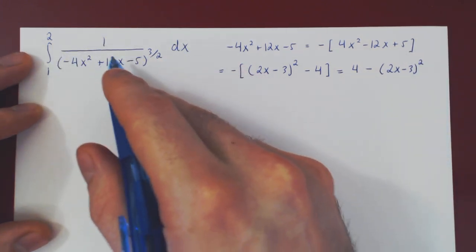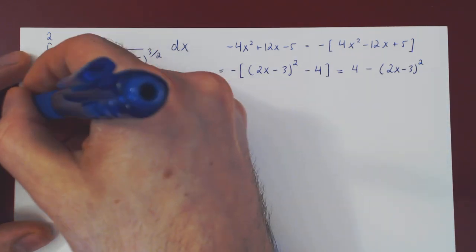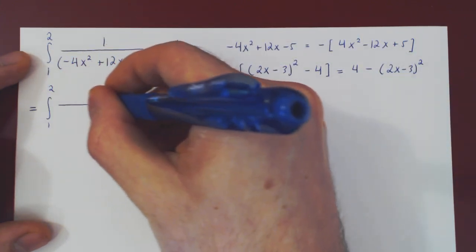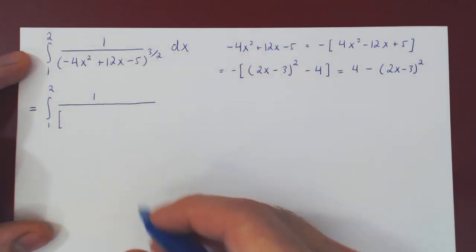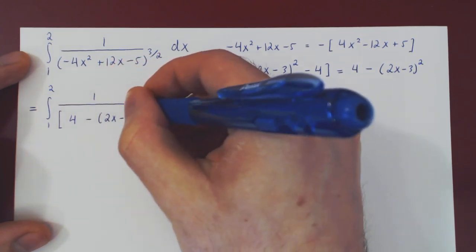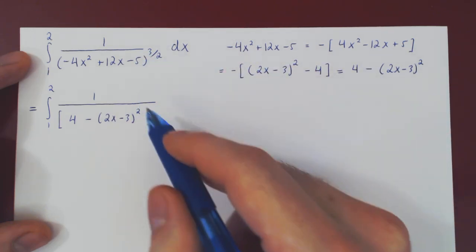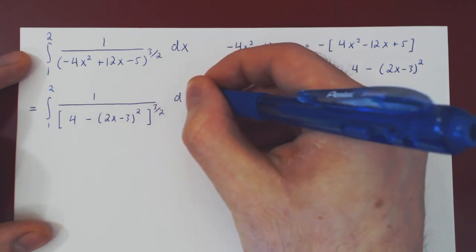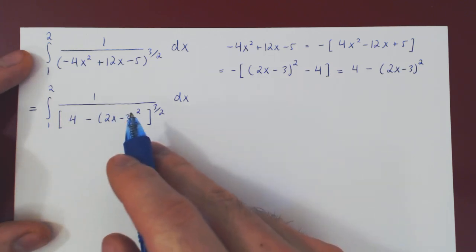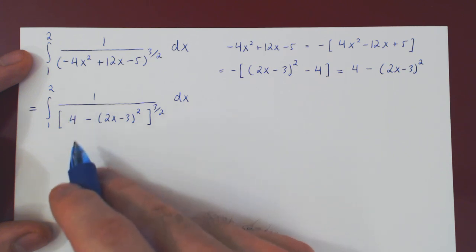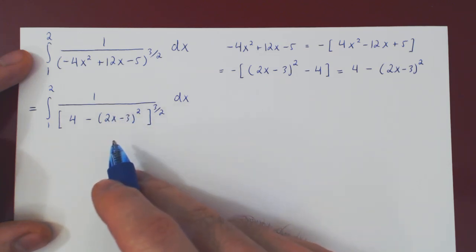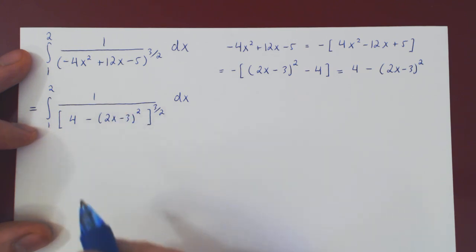So let me rewrite the integral now that we have completed the squares for the given quadratic. The quadratic is 4 minus (2x − 3)², raised to the power 3/2, dx. And if you look at this, we have a constant term minus something squared — think of the constant as 1, so 1 minus something squared, recalling that 1 minus sin²θ equals cos²θ.